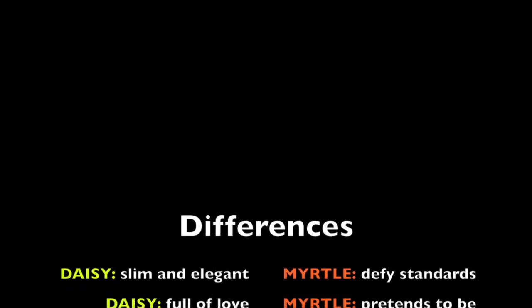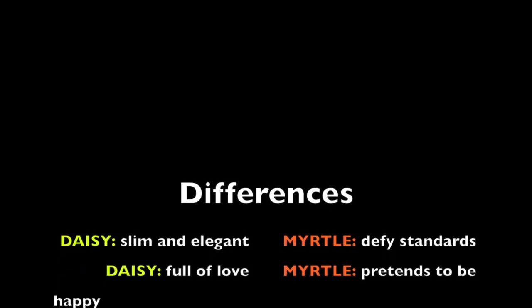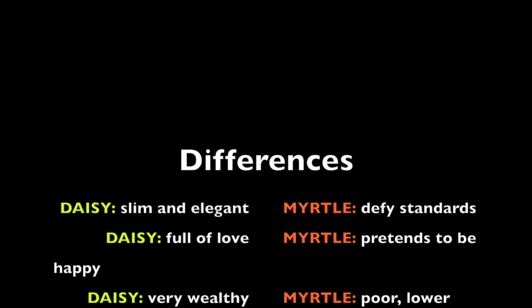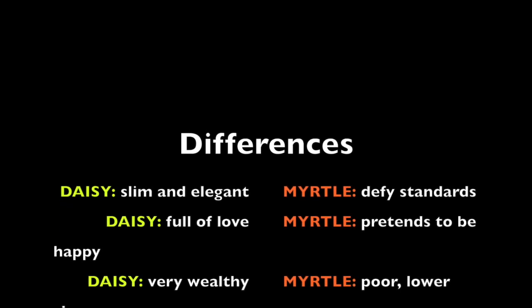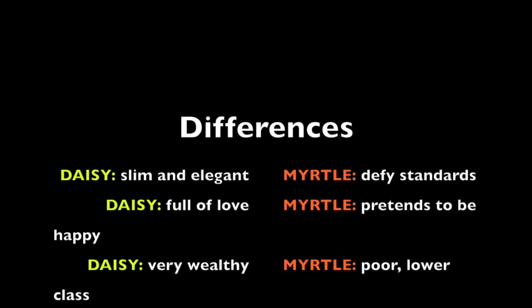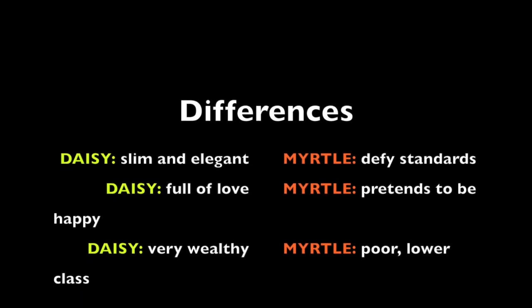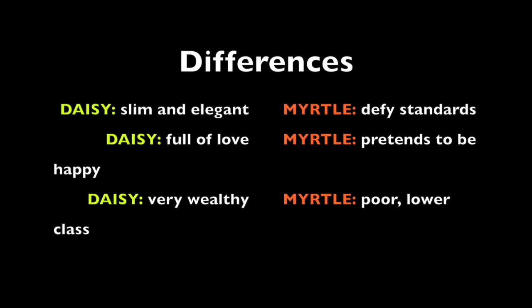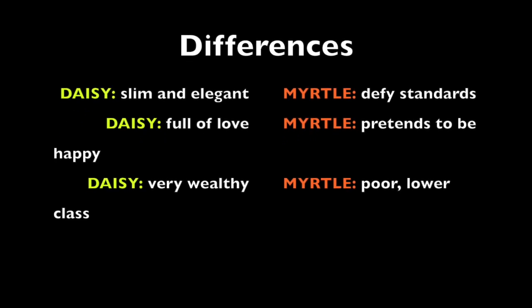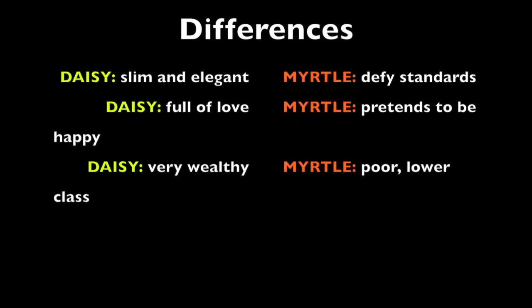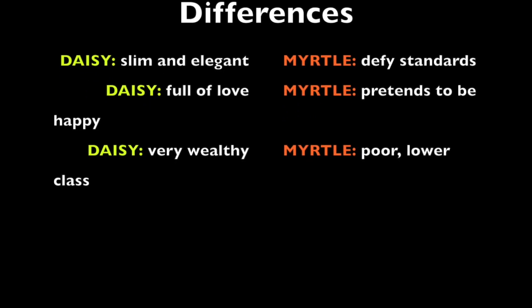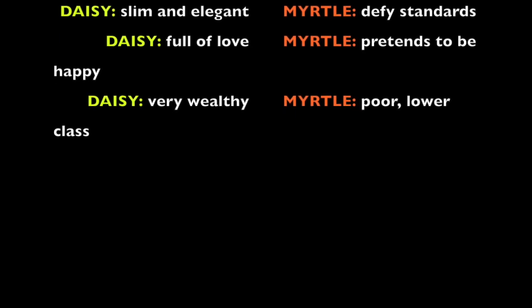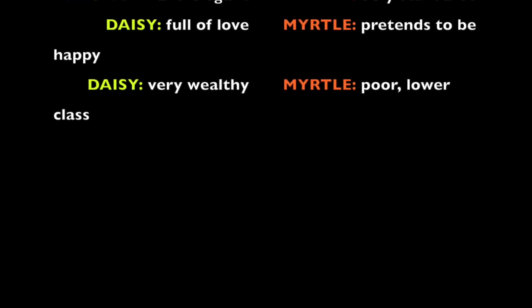Although it seems like there may be many differences, there are not as many as you think. Daisy is described as having a slim figure and dressing very elegantly. Just as daisies are white and pure, so is Daisy Buchanan. She is often seen wearing white and has a simple yet wealthy sense of style.